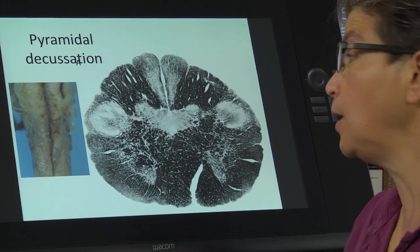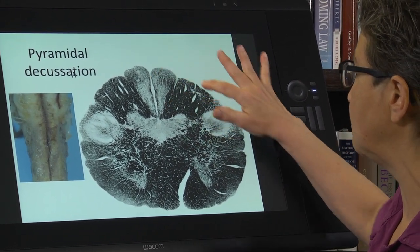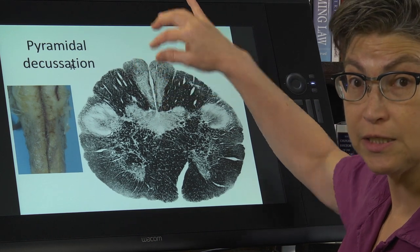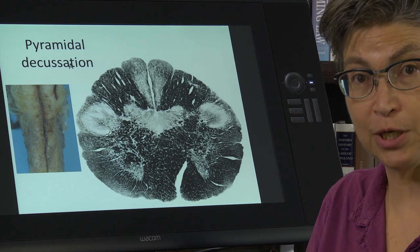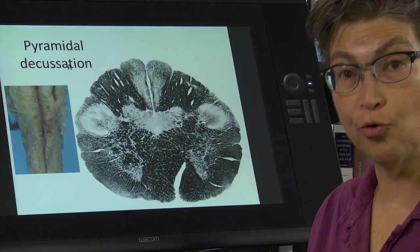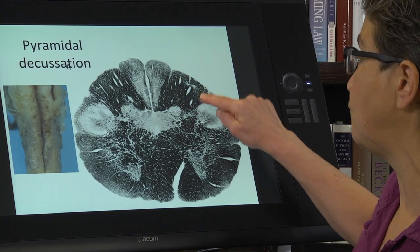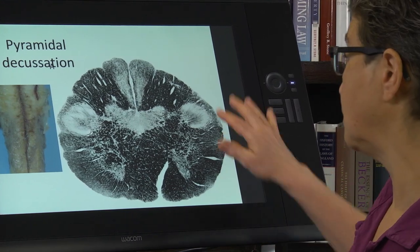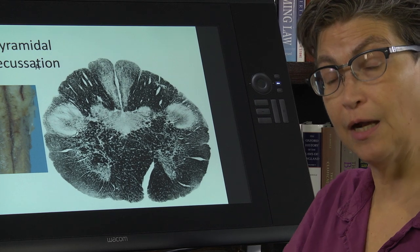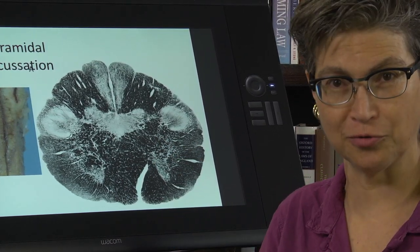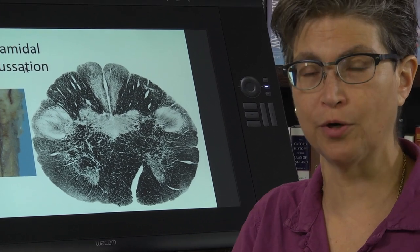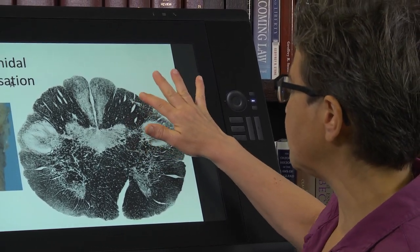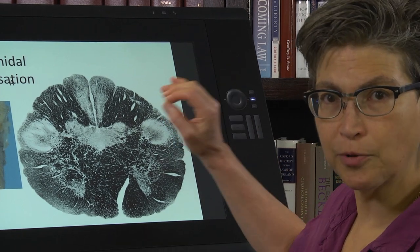Let's start with the lemniscal pathway, marked by the dorsal columns. The central part is the fasciculus gracilis, carrying light touch, proprioception, and vibration from the ipsilateral leg and lower trunk. Fasciculus cuneatus carries the same modalities from the ipsilateral arm and upper trunk. Note that fasciculus cuneatus appears properly black — all fibers — while gracilis appears gray.